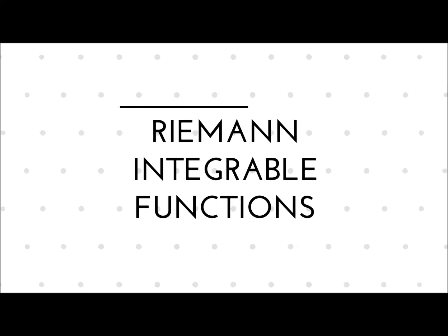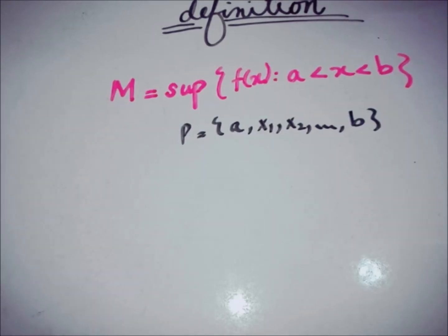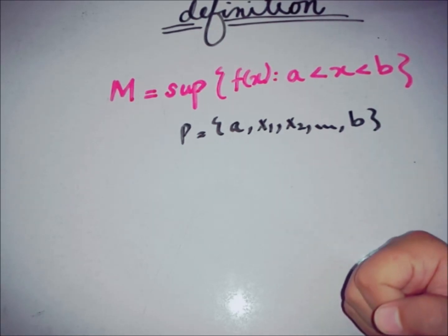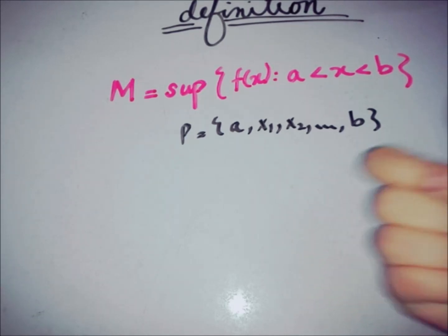Let's start with the definition. In the previous video we talked about what is the supremum of a function provided a partition P. We write it as M equal to the supremum of the function where x is taken between A and B, and A and B are elements of the partition P that goes from X0, which is A, to Xn, which is B.